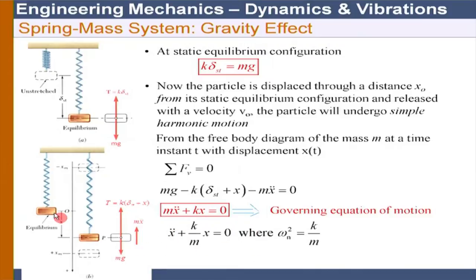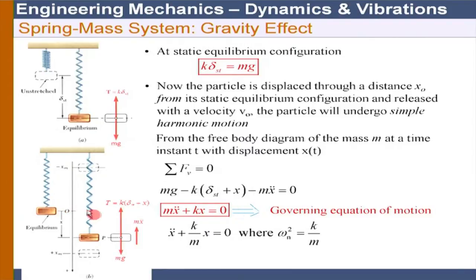This equation of motion is derived from the static equilibrium configuration. When we measure vibration from the static equilibrium configuration for this system, there is no effect of gravity in the equation of motion — that is very unique. The gravity effect does not appear as long as we derive the equation of motion from the static equilibrium configuration, meaning x is measured from that static equilibrium position.